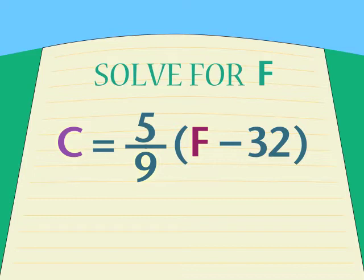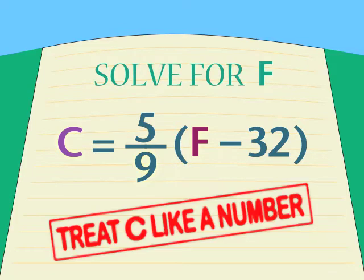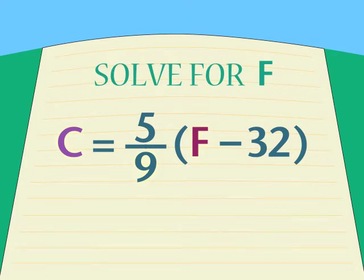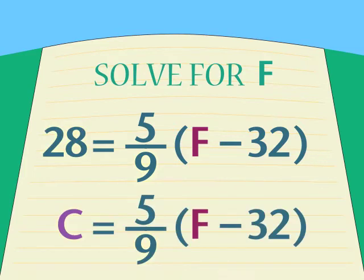We solve for only the one variable, and we treat the other variable, the letter C, just as if it were a number. We use exactly the same steps we did in working out this problem a few minutes ago, with only one small difference. In that case, we substituted 28 degrees for C. In this case, C is just C. But we treat it the same as if it were a number.